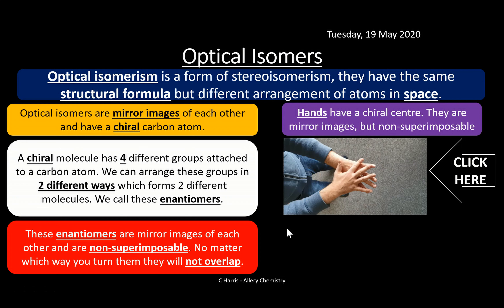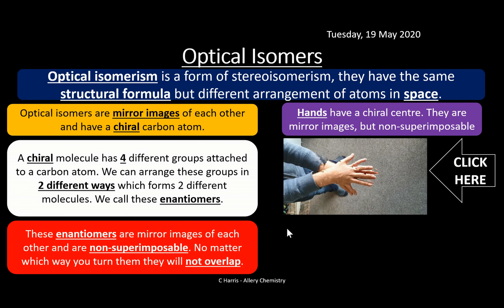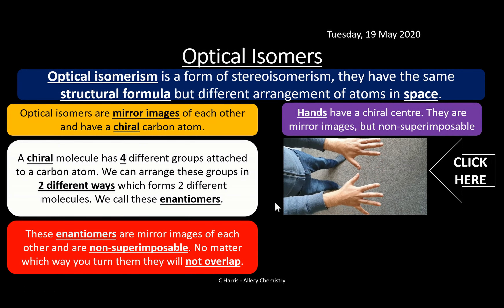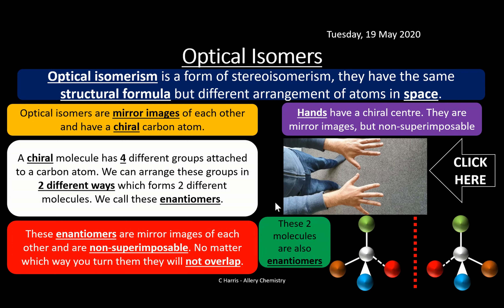As you can see in the animation, when we overlap the hands they don't superimpose at all, but you can clearly see the mirror images. We can apply the same principle to molecules. These two molecules are enantiomers of each other — you can see the mirror line down the middle. If I take one and put it over the top of the other, no matter how many times I orientate it, it isn't going to superimpose.